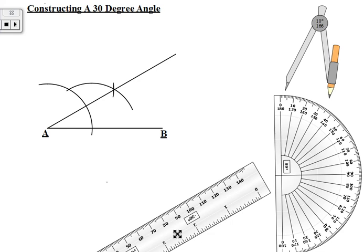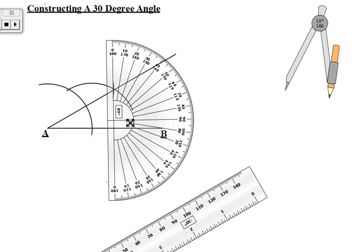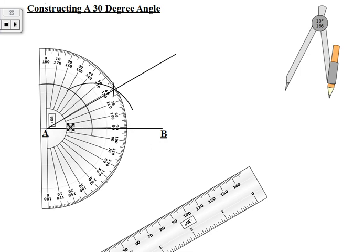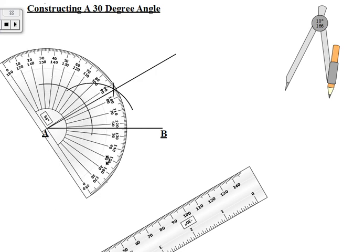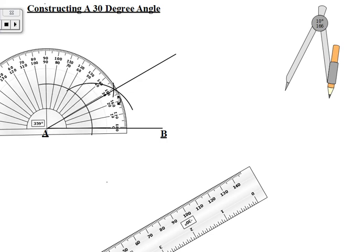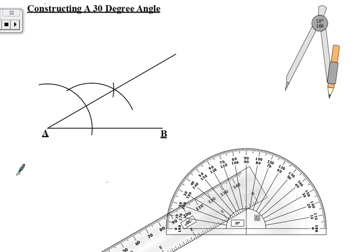Now we're going to use the protractor to confirm whether this is a 30-degree angle. So we're going to center the protractor at the vertex of the angle, which we chose to be point A. We're going to ensure that the zero line on the protractor is in line with one of the legs of the angle — here it is in line with line AB. Let's take our measurement: it reads 30 degrees. The other leg goes right to 30 degrees, which means this angle is in fact a 30-degree angle.